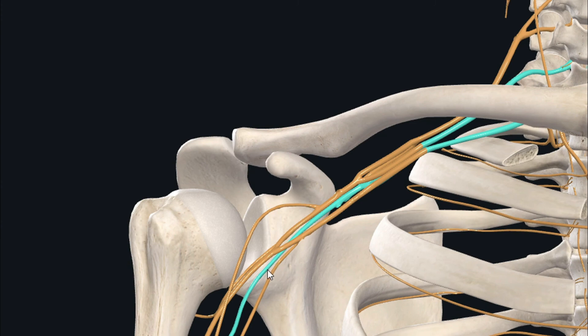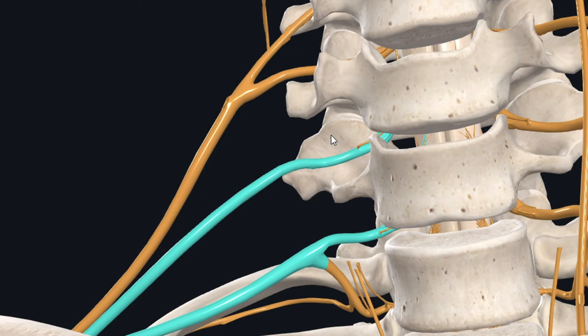The radial nerve itself arises from the posterior cord of the brachial plexus. Regarding the nerve roots supplying the extensor indicis muscle, the anterior rami of the 7th and 8th cervical spinal nerves provide nerve fibers to this muscle.